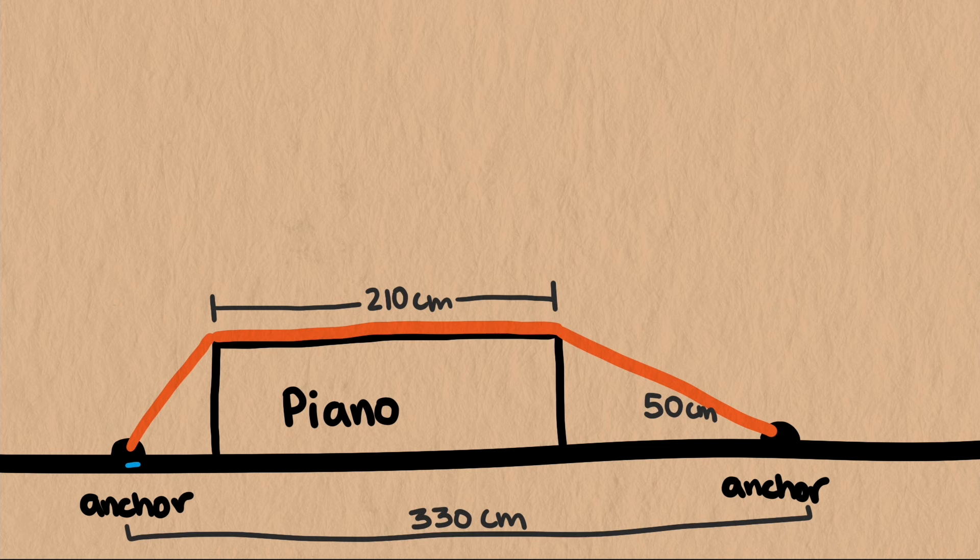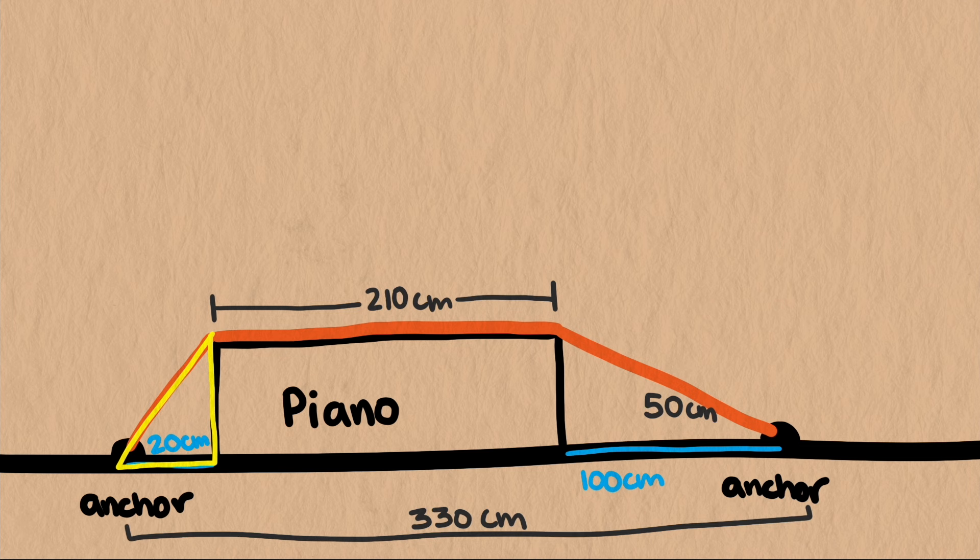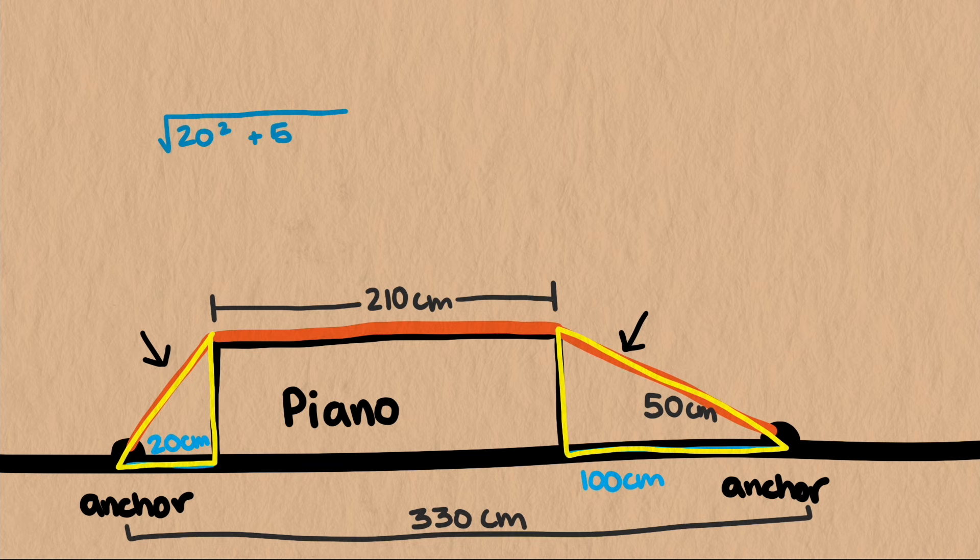And for the case when the piano is off-center, we'll say there's 20 centimeters on one side and 100 centimeters on the other side. To find the total length of strap used in each scenario, we need to find the length of each hypotenuse of these triangles. The calculations only require the Pythagorean theorem and a sum.